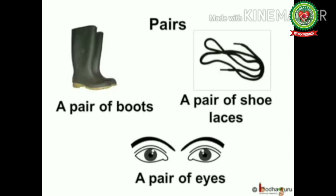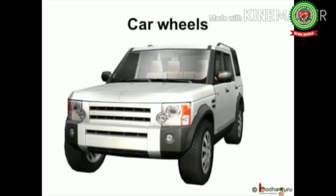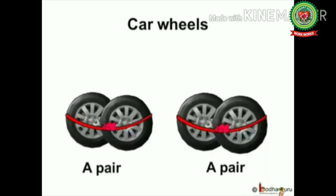A pair of boots, shoelaces, a pair of eyes, or a pair of ears are some more things that come in pairs. Now tell me, how many wheels are there in a car? Four — two at the front and two at the back. That means in total there are four wheels. The first two wheels at the front make a pair.